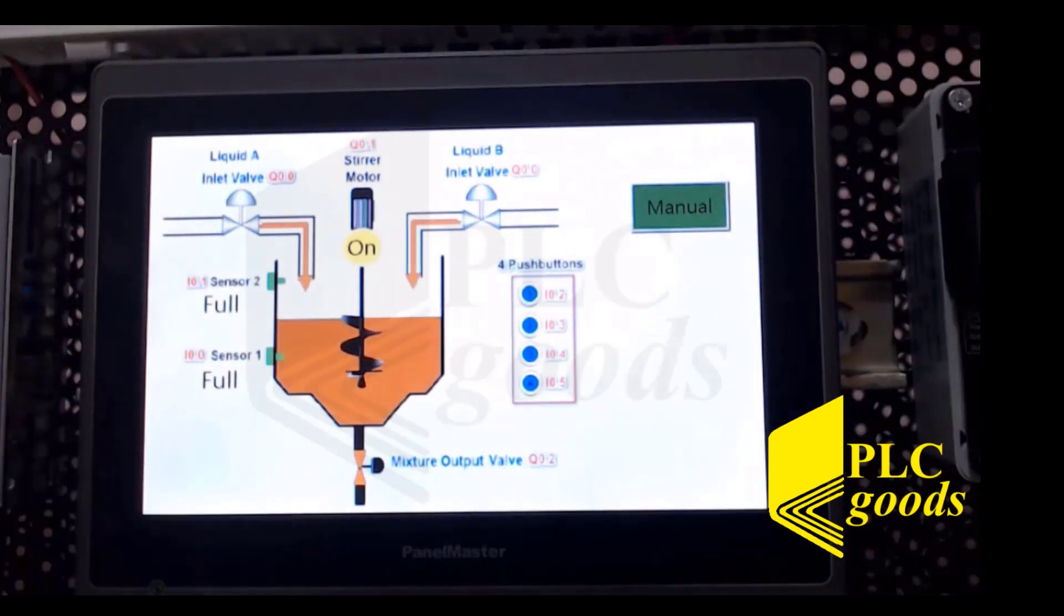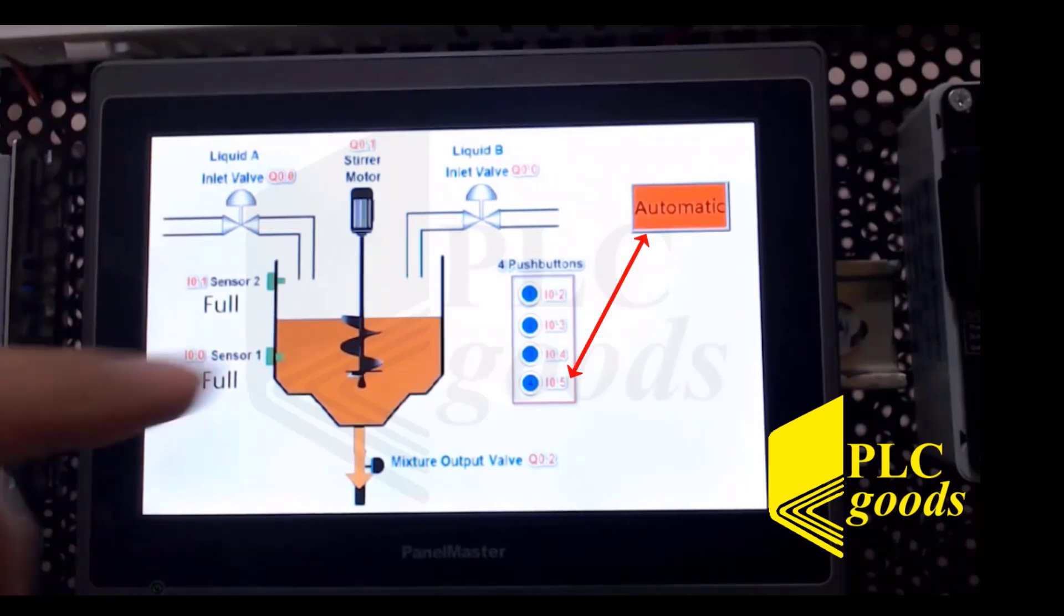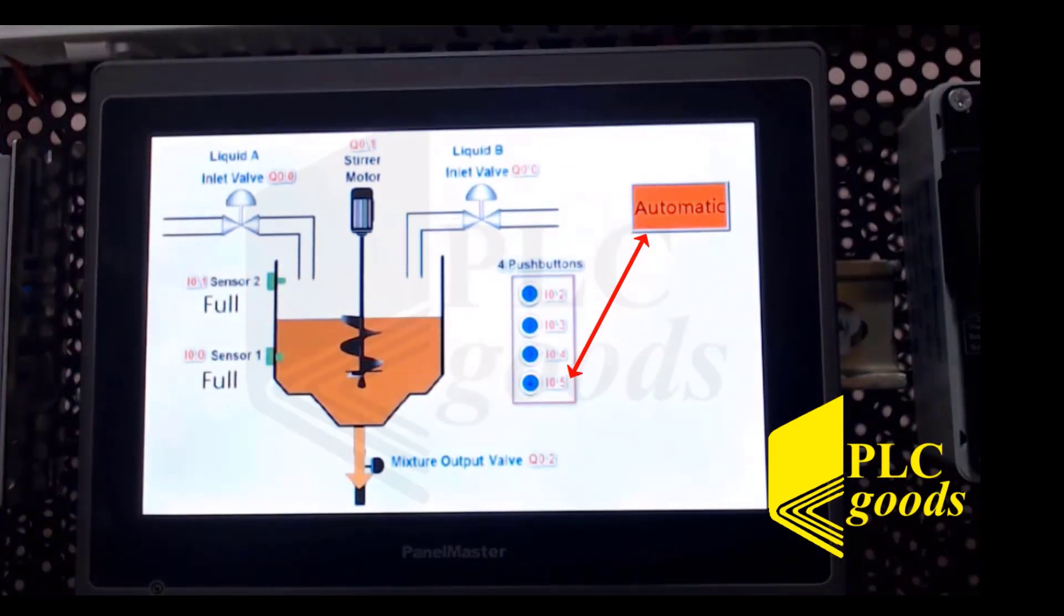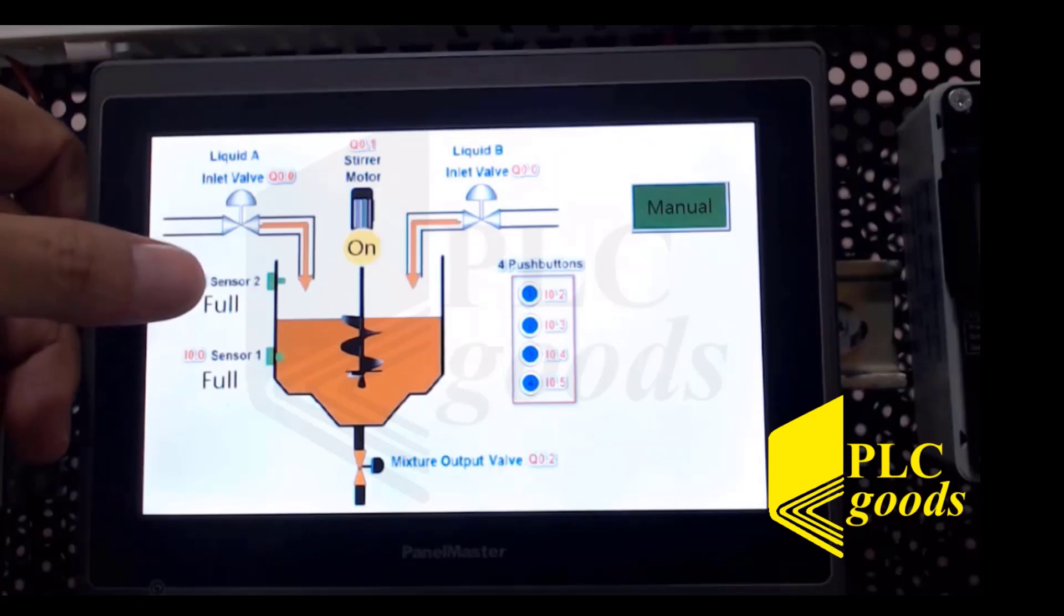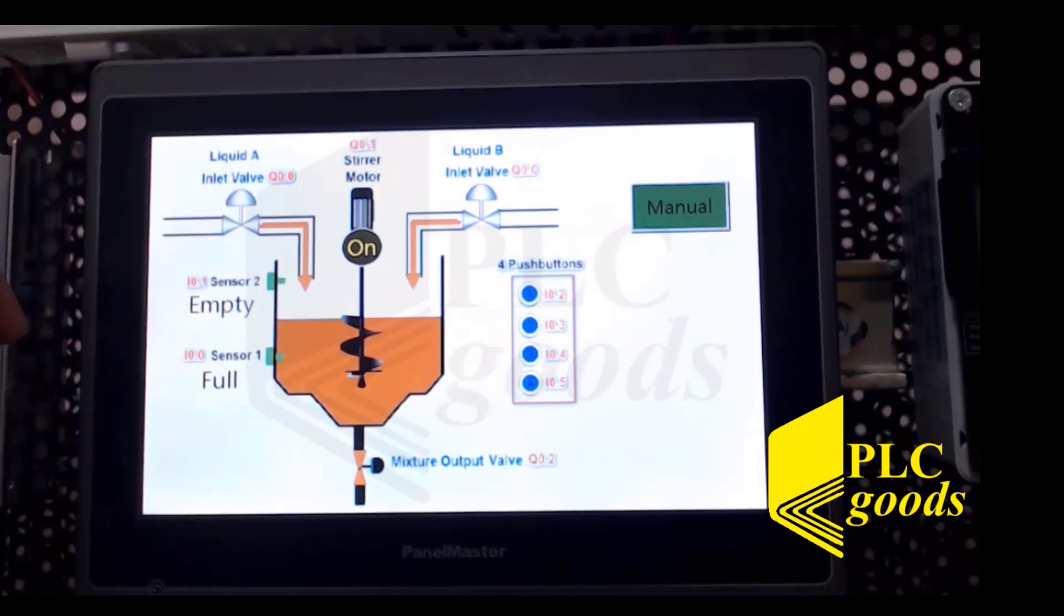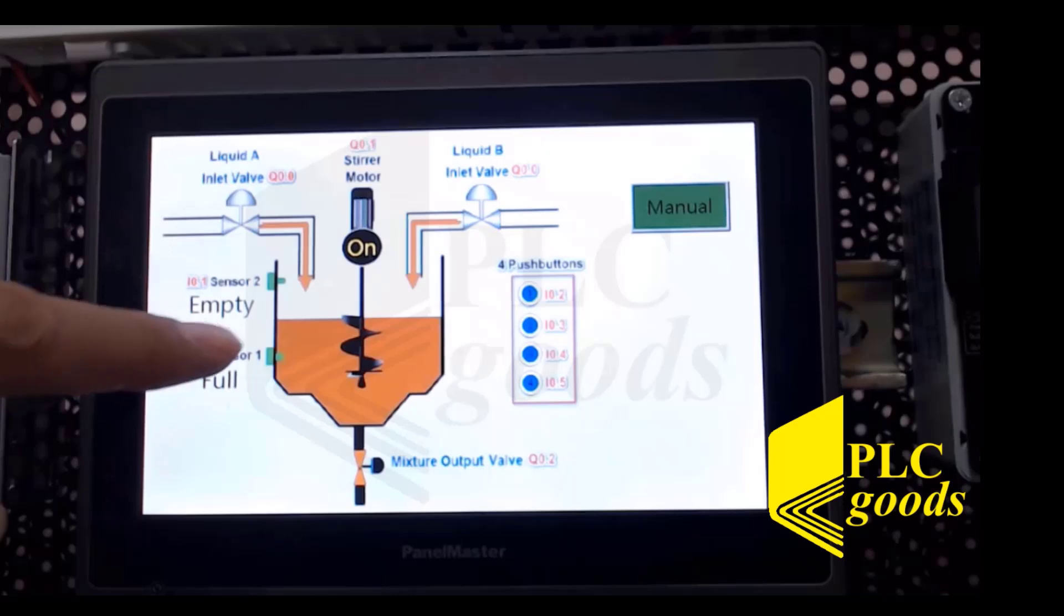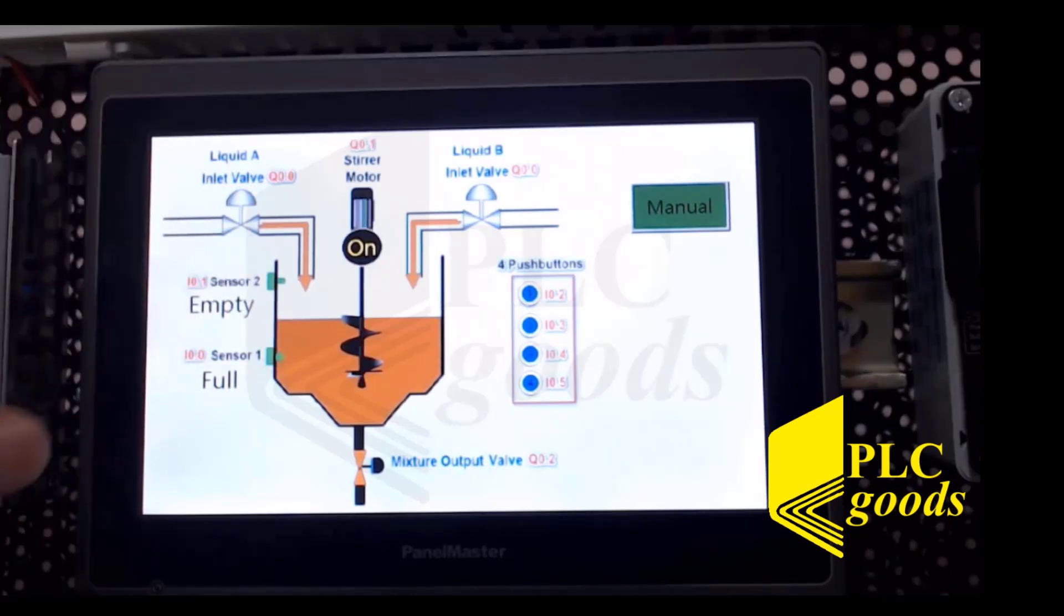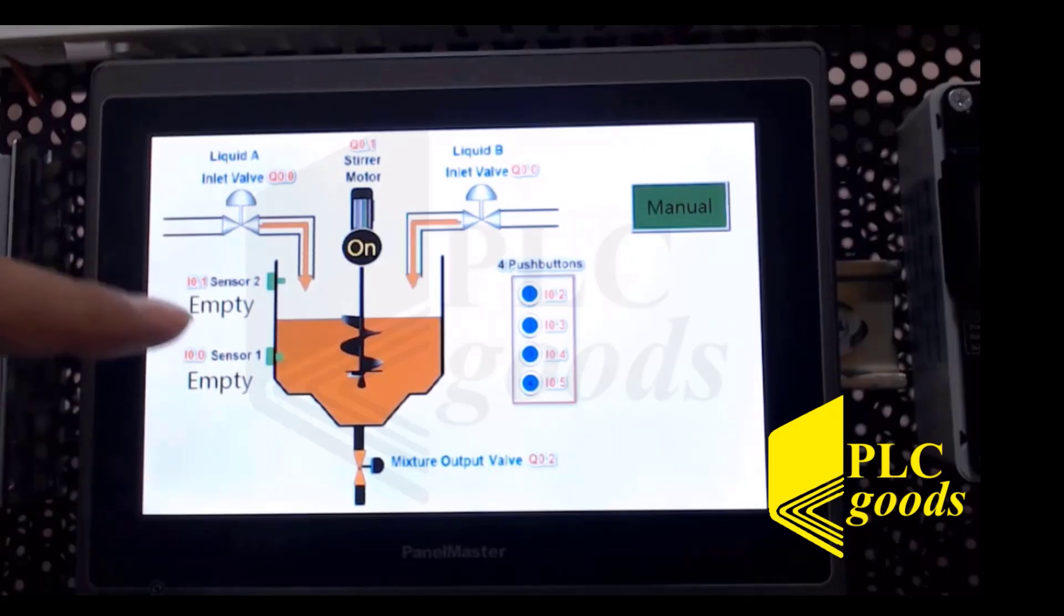And automatic. When I push IO5, it changes from manual to automatic. That being said, when I push this part of the LCD, you see empty, that means this sensor is off. Now this sensor is off and you see the text empty, empty.